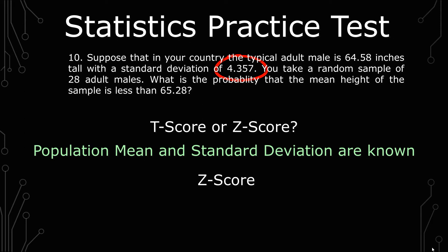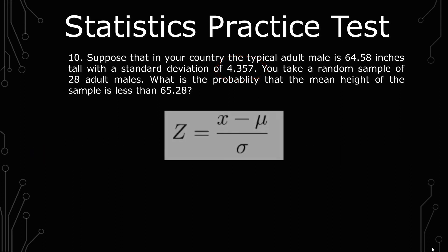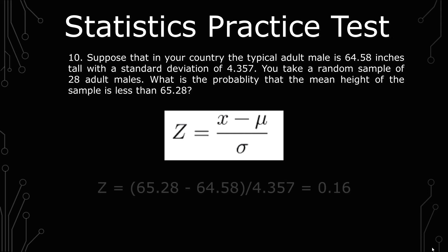Now let's go into the calculation, because we know what we're doing now — we're doing a Z-score calculation. We have the equation: Z equals X minus mu, divided by the standard deviation. So in this case, we have Z equals 65.28 minus 64.58, divided by 4.357, which gives us a Z-score of 0.16.